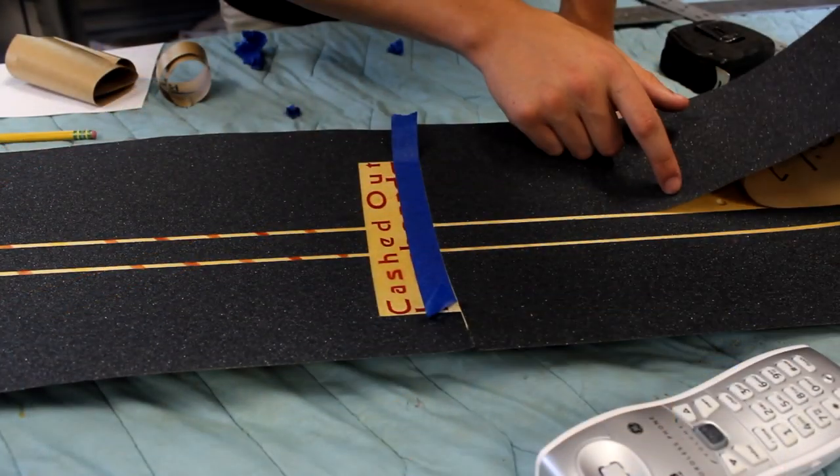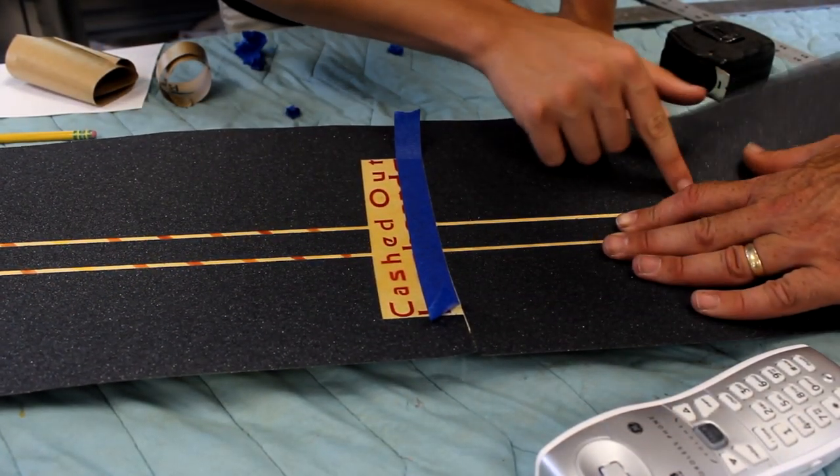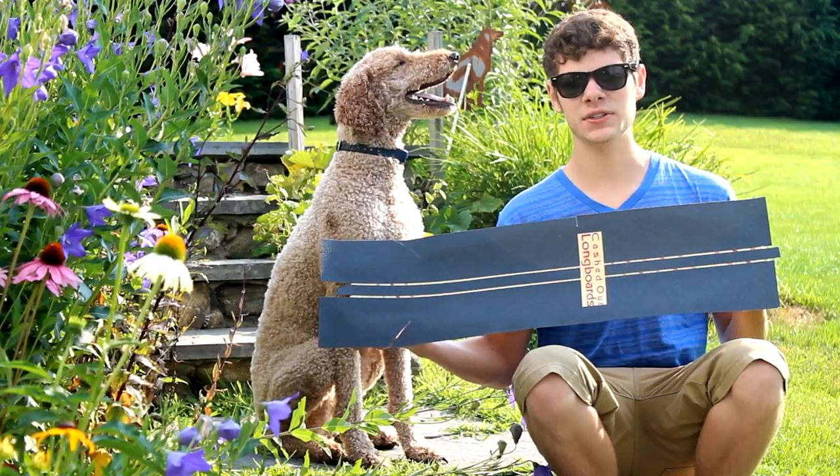While applying the grip tape, it may be easier to remove small sections of backing at a time so the whole sheet doesn't stick to your board where you don't want it. Now that you've got your grip tape stuck on well, I'll show you how to trim off the extra and finish off your board.